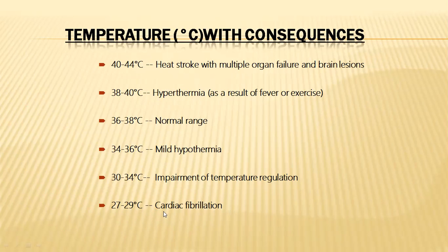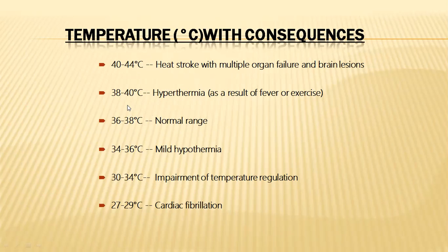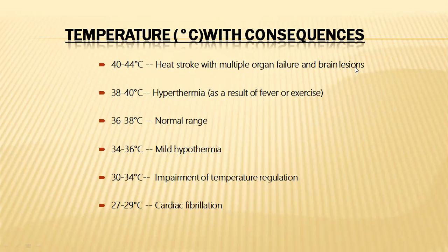The consequences of temperature changes are: at 27 to 29 degrees centigrade, cardiac fibrillations start; 30 to 34 degrees centigrade causes impairment of temperature regulation; 34 to 36 degrees results in mild hypothermia; 36 to 38 is the normal range; 38 to 40 is fever or hyperthermia, which may arise during exercise; 40 to 44 is due to heat stroke or multiple organ failure — when heat stroke occurs, multiple organs fail, the brain forms lesions, and the organism may die.